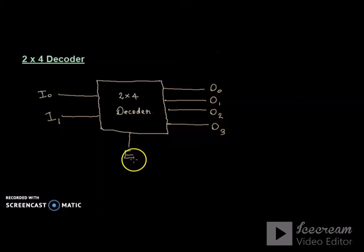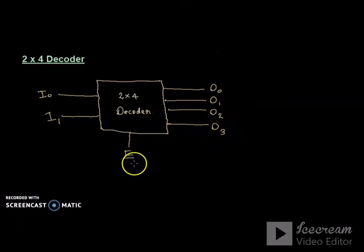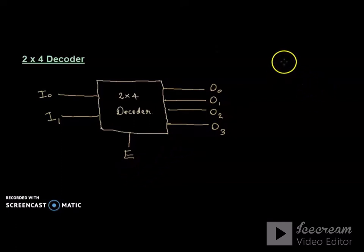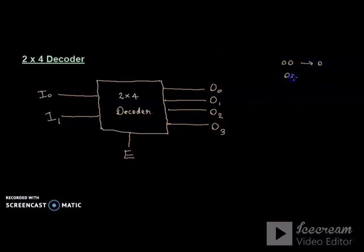When the enable line value is 0, all outputs are 0 regardless of input. When the enable value is 1, outputs are active. The binary numbers and their corresponding decimal values are: 00 = 0, 01 = 1, 10 = 2, and 11 = 3.